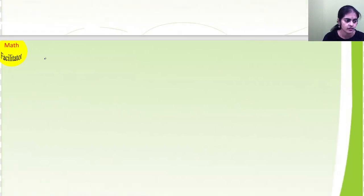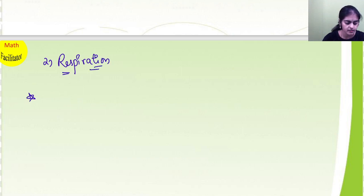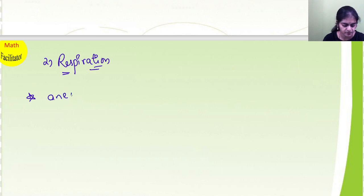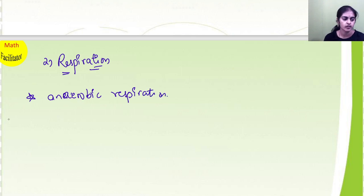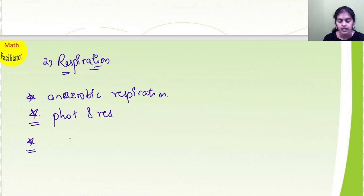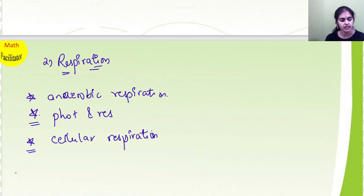Now let's proceed to the respiration chapter. I am telling you only the most important questions. In this chapter you will learn the anaerobic respiration process — how you show the anaerobic respiration process, the procedure with the materials required and all. And you will learn the difference between photosynthesis and respiration. Also, you will learn how to draw the diagram of cellular respiration in an organelle.